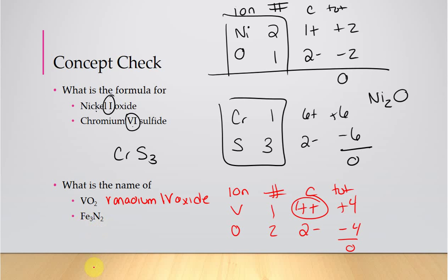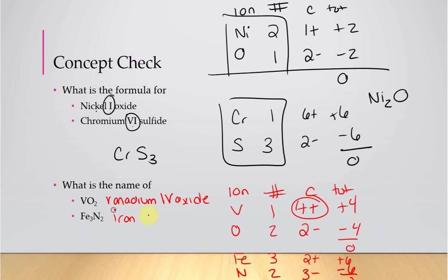For Fe₃N₂: iron and nitrogen, must add up to zero. There are 3 irons and 2 nitrogens. Nitrogen is in group 5, so −3 charge, giving a total negative of −6. To cancel, the total positive must be +6. Six divided by 3 ions = +2 per iron. So this is iron(II) nitride.